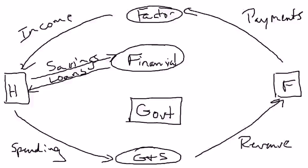So let's first talk a little bit about the spending. The government actually has two types of spending. One type of spending the government does is it purchases goods and services. I'll just call that G because it's government spending on goods and services. That's when the government goes out and directly buys a good or a service.